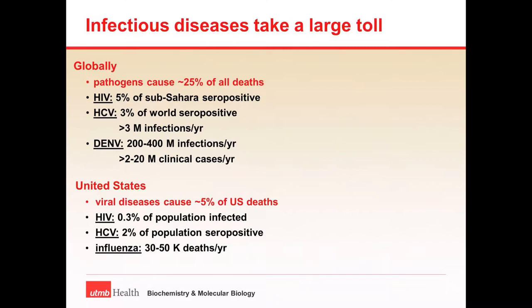So that's the landscape globally. Even in the United States, for those listeners from the U.S. or Canada, we find that viral diseases cause about 5% of U.S. deaths. The major culprits in this case would be HIV, HCV, and influenza, which year in, year out, even without a particular epidemic, are still responsible for between 30,000 and 50,000 deaths.